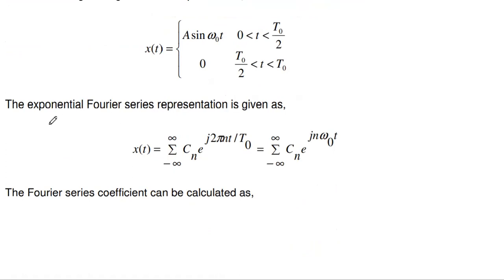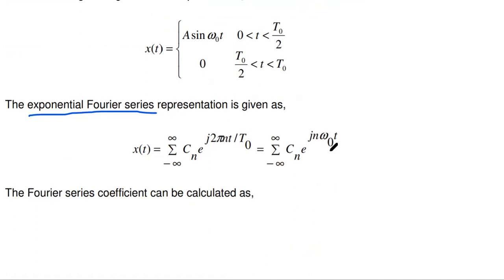Next, we represent the signal in exponential Fourier series. In exponential Fourier series representation, any signal x(t) can be represented as summation from n = −∞ to ∞ of cₙ · e^(jnω₀t), where ω₀ = 2π/T₀. We can write it in either form — both are equivalent. This is the exponential Fourier series representation.